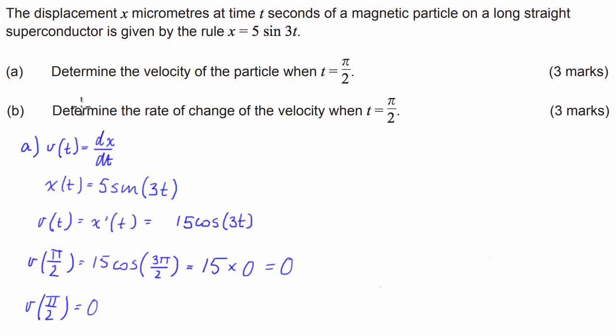Now let's do the next one, part B. Determine the rate of change of the velocity when time equals pi on 2. So rate of change of velocity is simply acceleration.